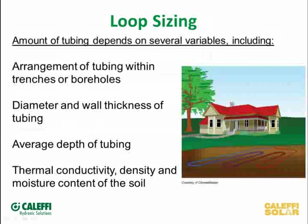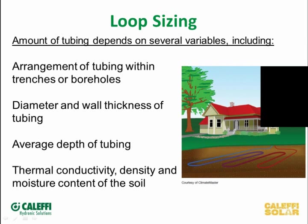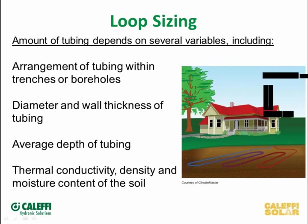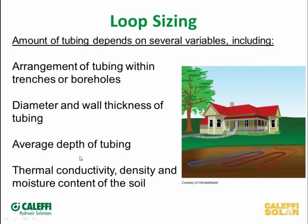More on loop sizing: the arrangement of tubes in the borehole. Typically in a borehole you'll have a loop come out with a U-bend already formed at the factory — you just get the loop length you need and drop it in the hole. A lot of the time those will be grouted into the holes with products poured down to ensure good contact with the earth. Tubing wall thickness matters too — with plastic tubing, thicker walls mean less heat transfer. There's tubing made specifically for geo loops — PE polyethylene tubing with the listings right on the side. The depth in a trench is important; you want to get down where ground temperature stays fairly consistent.